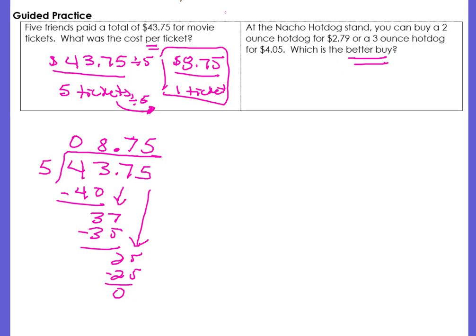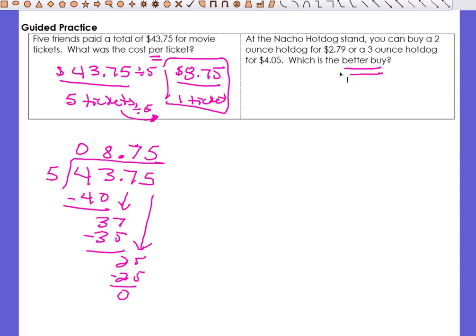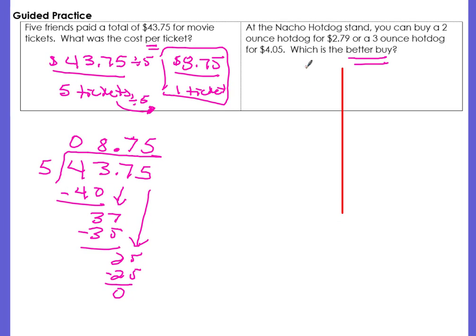So we're going to have to compare the two. So I'm going to draw a line separating the two. My first rate is the two ounces for $2.79. And the other one is going to be the three ounces for $4.05. So we need to find the unit price for each option. So I want you to go ahead and pause the video and do the work and then come back and check your answer.